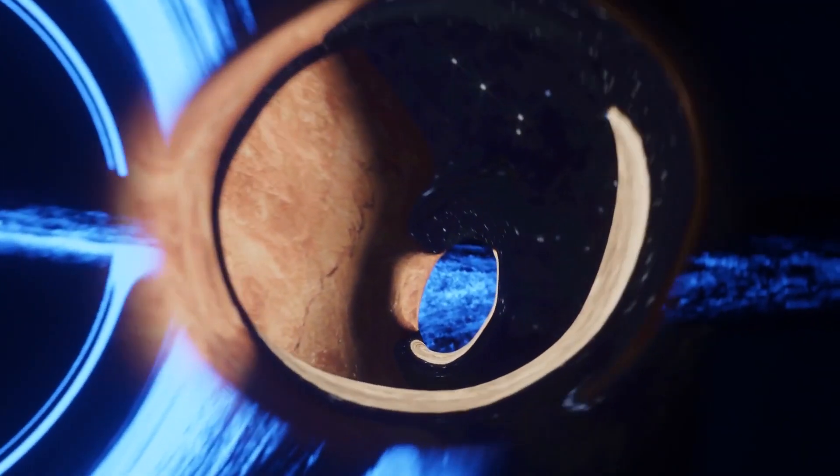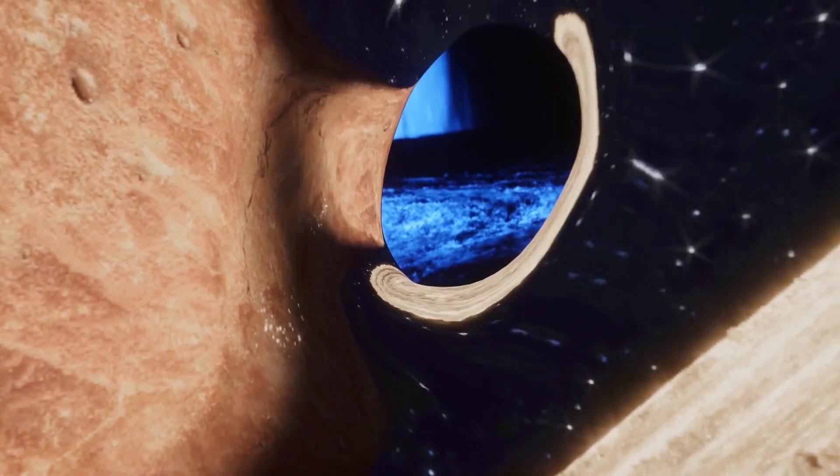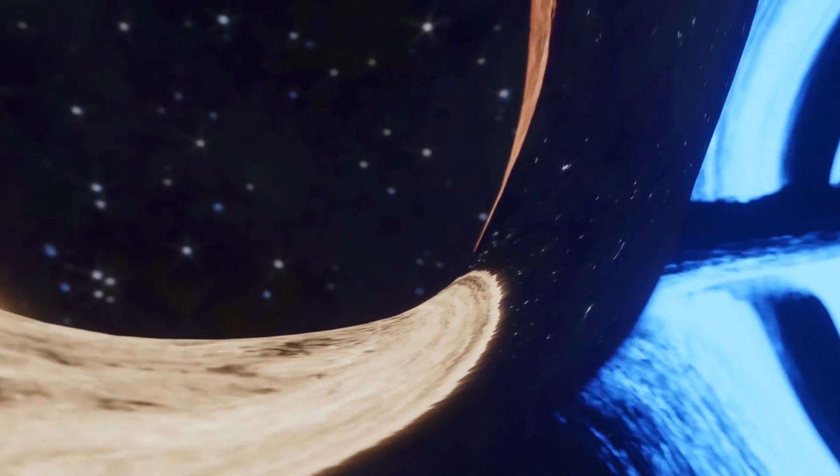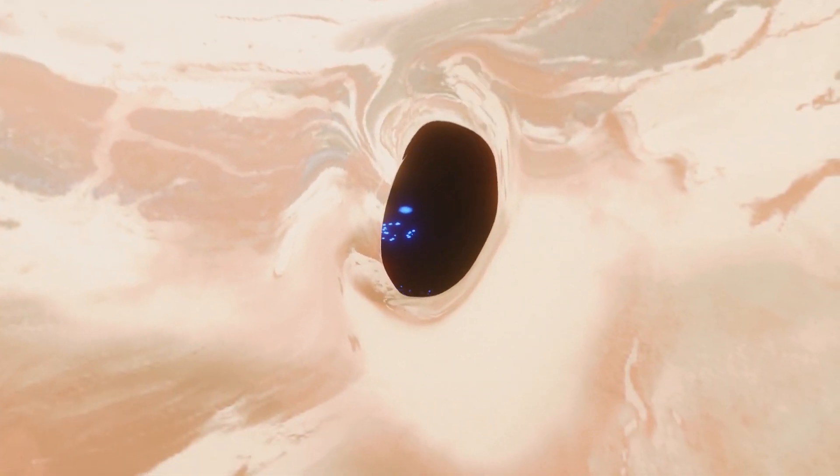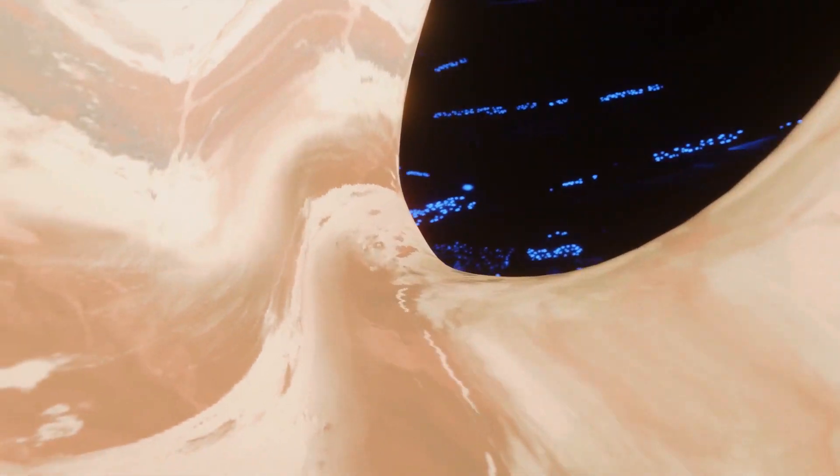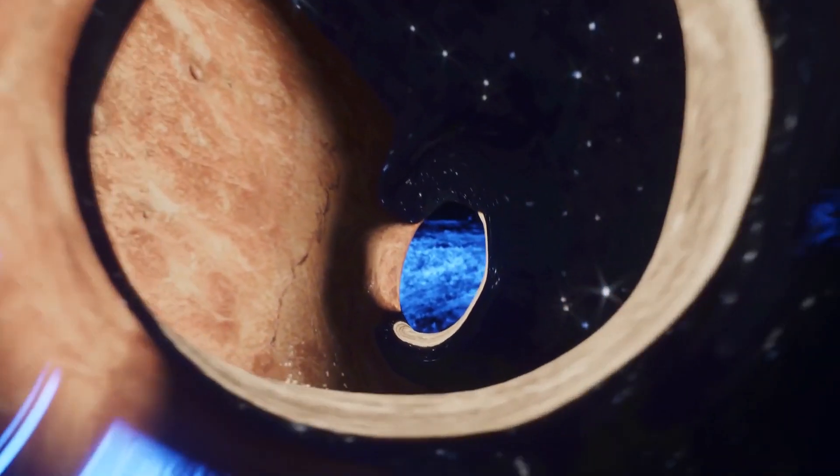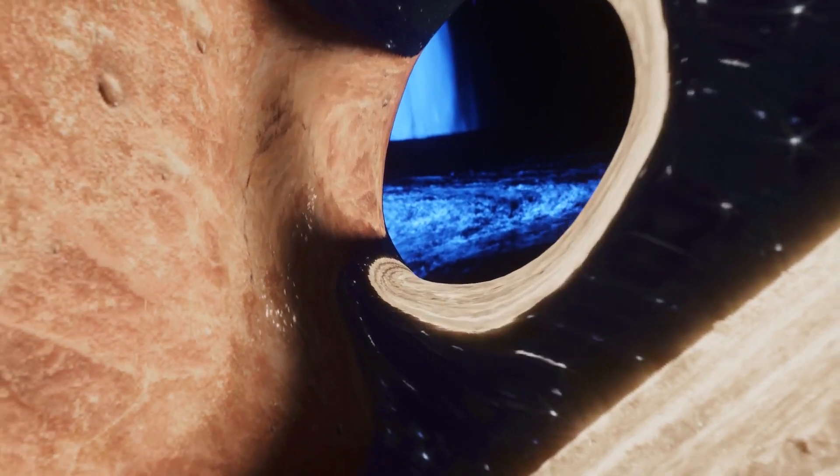Massive bodies, such as stars or black holes, are especially effective in causing significant gravitational lensing due to their immense gravitational attraction. Black holes, in particular, represent one of the most extreme examples due to their incredible mass and compact size, leading to very pronounced lensing effects.